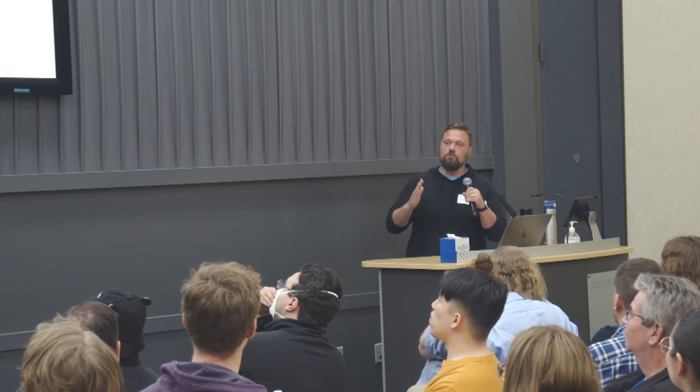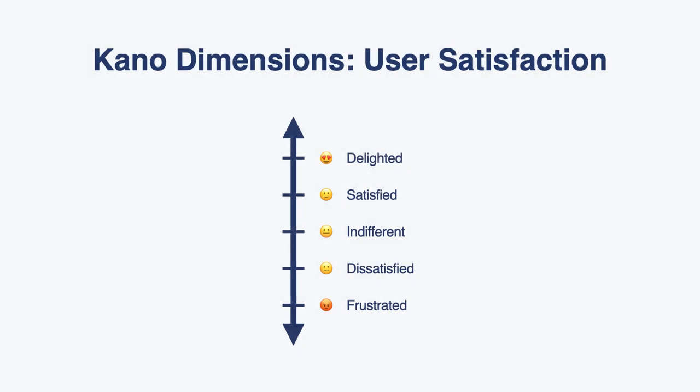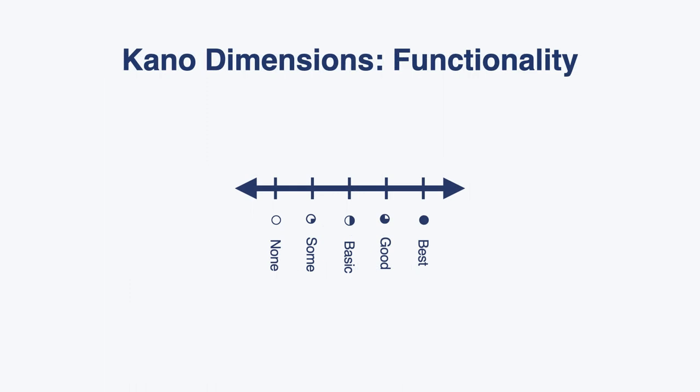The key concept of the Kano method is that it looks at product features through two dimensions. The first is user satisfaction, plotted on the vertical axis — as you go up, satisfaction increases; as you go down, it decreases. At the top we have 'delighted' and at the bottom 'frustrated,' with a few other conditions in between.